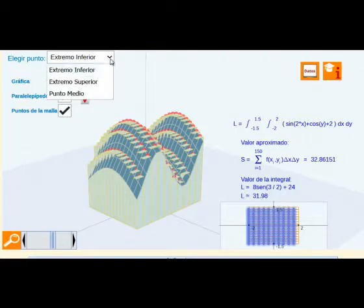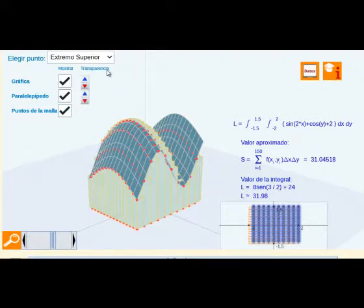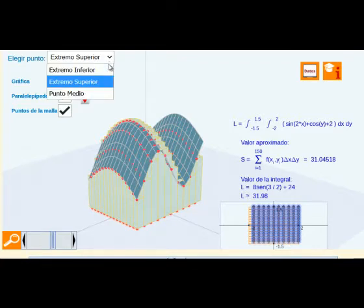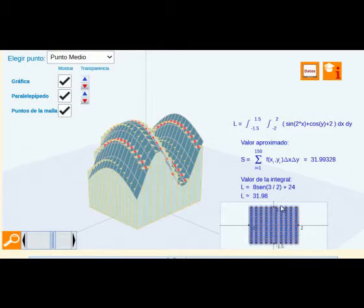La elección del punto se puede variar y nos permite también la escena trabajar con el extremo superior en cada uno de los subrectángulos o el punto medio. El valor exacto evidentemente no cambia pero sí podemos obtener distinto valor para esta aproximación que nos daría la suma de Riemann.